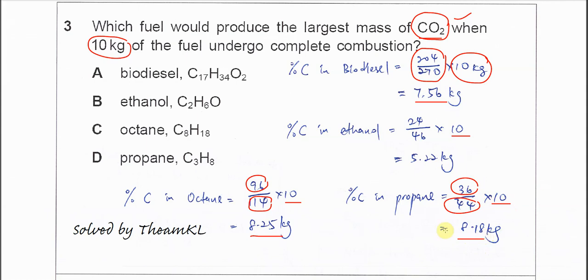Octane has the highest percentage of carbon, so after it gets burned, it will produce the largest mass of CO2, because carbon after oxidation forms CO2. The answer is C. Thank you.